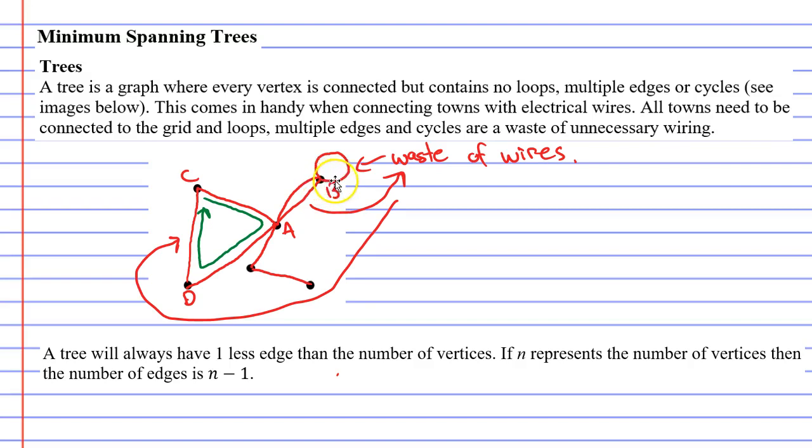In fact, a loop can also be regarded as a cycle and multiple edges also can be regarded as a cycle as well. So what I'm going to do is turn this back into a tree by getting rid of our loop and also getting rid of our cycle and getting rid of our multiple edges.